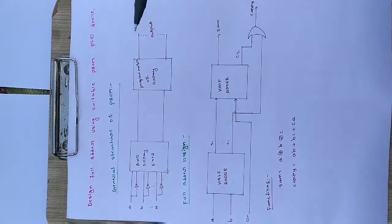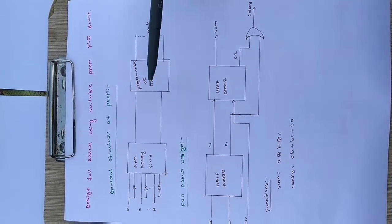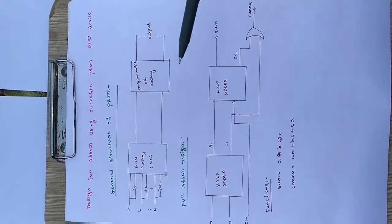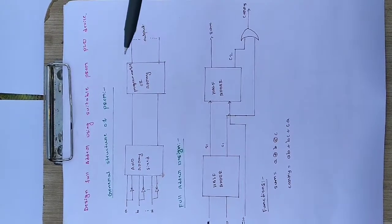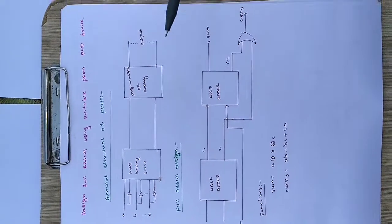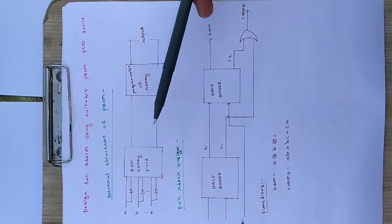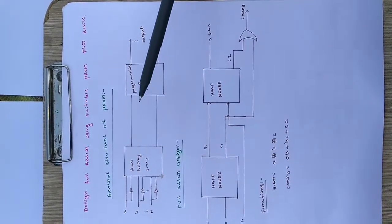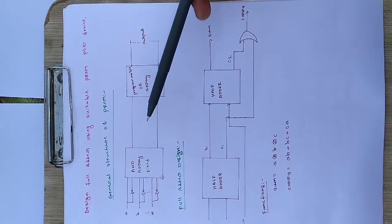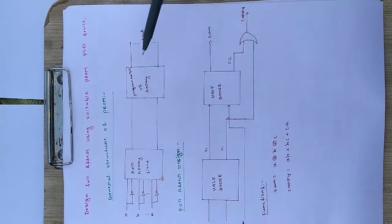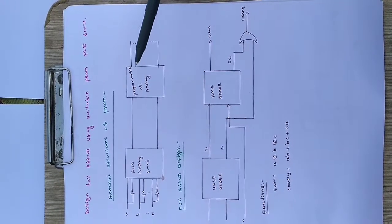The general structure of PROM consists of a fixed AND array and a programmable OR array. The array is the set of lines where you can fuse some points and realize the combinational circuit equation, that is a boolean expression. The AND array is fixed — you cannot program it yourself. The manufacturer programs the AND array, and you are only allowed to program the OR array.